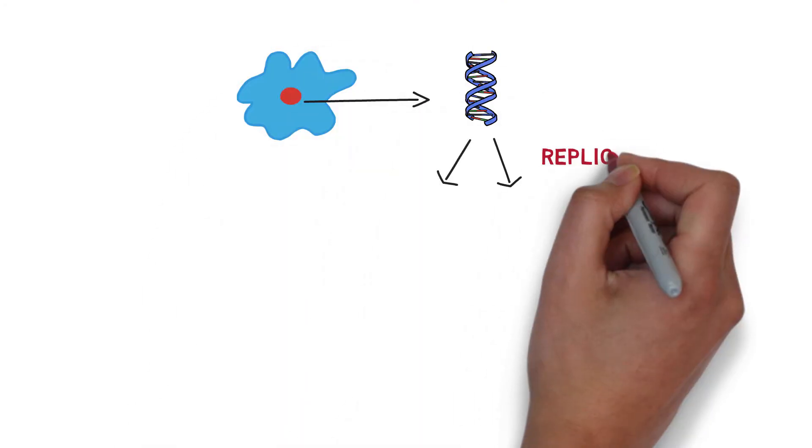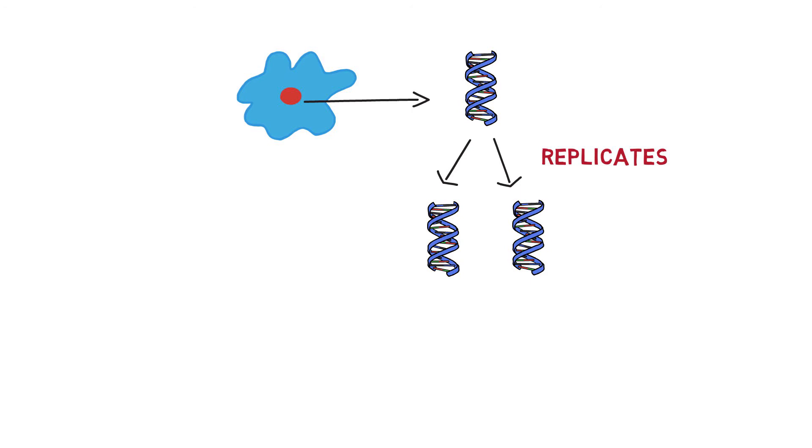In this type of reproduction, DNA molecule replicates and forms two DNA molecules. These two DNA molecules move to opposite poles of the cell.